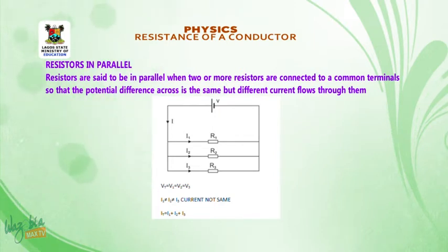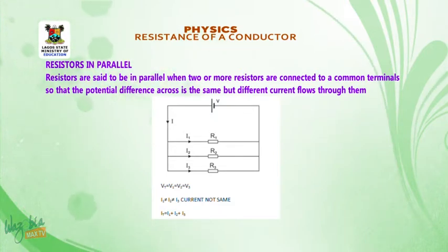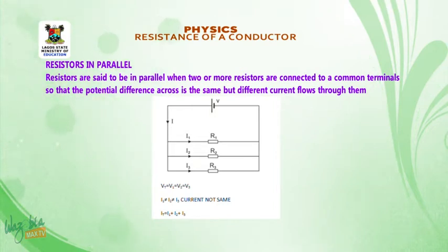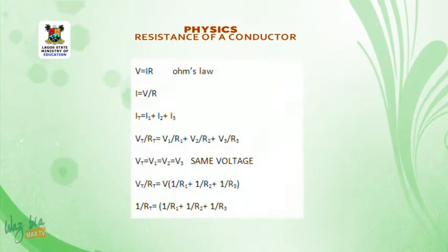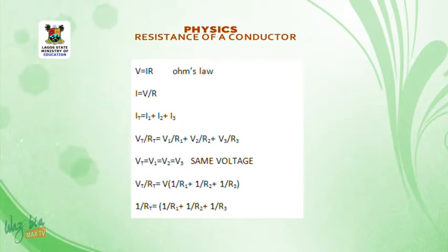Therefore I1 is not equal to I2, is not equal to I3. Using Ohm's law, V equals IR, we make I the subject of formula and put it in the equation IT equals I1 plus I2 plus I3. So: Vt/RT equals V1/R1 plus V2/R2 plus V3/R3.